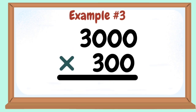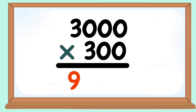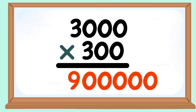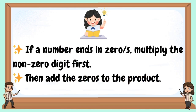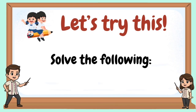Example number 3: 3,000 times 300. Multiply 3 times 3 equals 9. Then add the five zeros. 900,000 is our answer. If a number ends in zeros, multiply the non-zero digit first, then add the zeros to the product. Let's try this — solve the following.